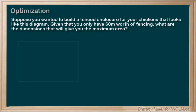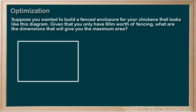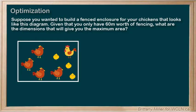Suppose you wanted to build a fenced enclosure for your chickens, but you have really dramatic chickens and not all of them get along. So you're splitting the enclosure into two halves, like this diagram. Given that you only have enough fencing material to cover a total length of 60 meters, what are the dimensions of the pen that would give you the maximum area inside for your chickens?